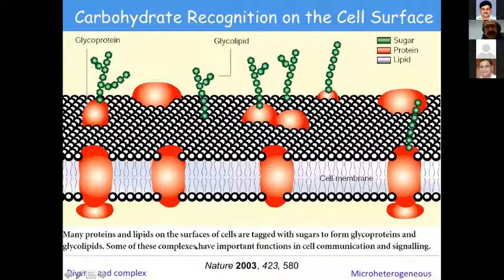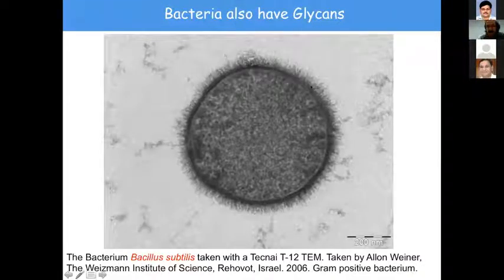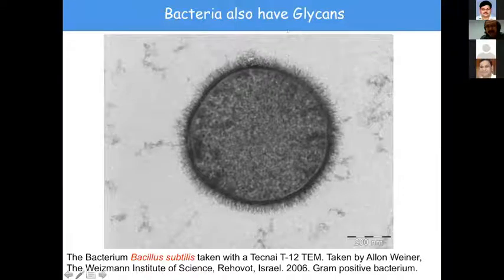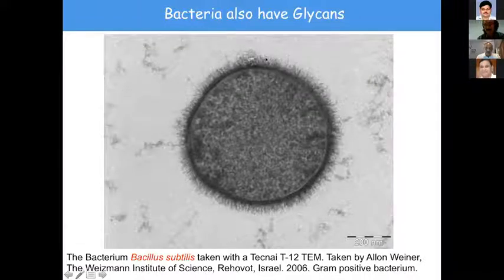For many years it was believed that glycosylation — the post-translational modification of proteins — is only present in eukaryotes and virtually absent in prokaryotes. But this notion has been refuted, and over the last 15 years it is well accepted that glycosylation is present in bacteria. This TEM image taken by Alan Wainer from the Weizmann Institute in 2006 shows appendages on the cell surface of Bacillus subtilis, which are glycans that help the bacteria evade immune response, perform cell-cell communication, and facilitate infection.